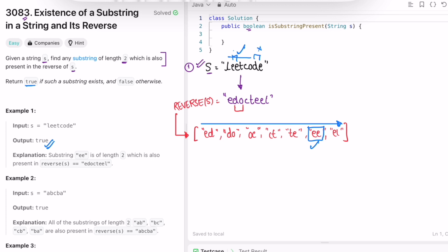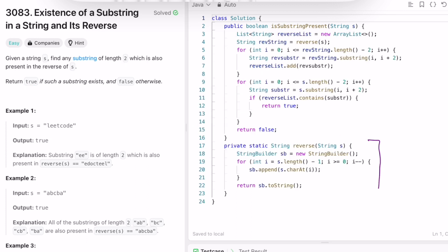Now let's take a look at the code. Here I'm writing a helper function which will reverse the string. I'm creating a list which will hold substrings of length 2 on the reverse string. I create a string and call this helper function, which will return the reverse of the input string s.